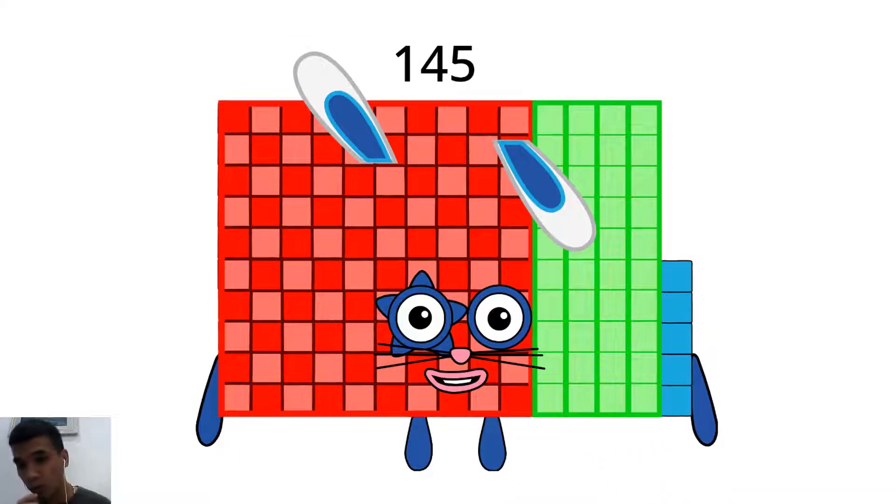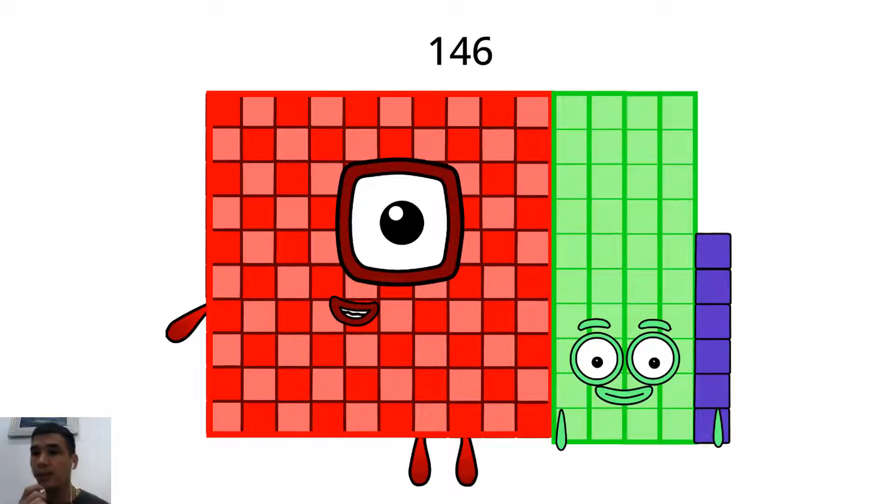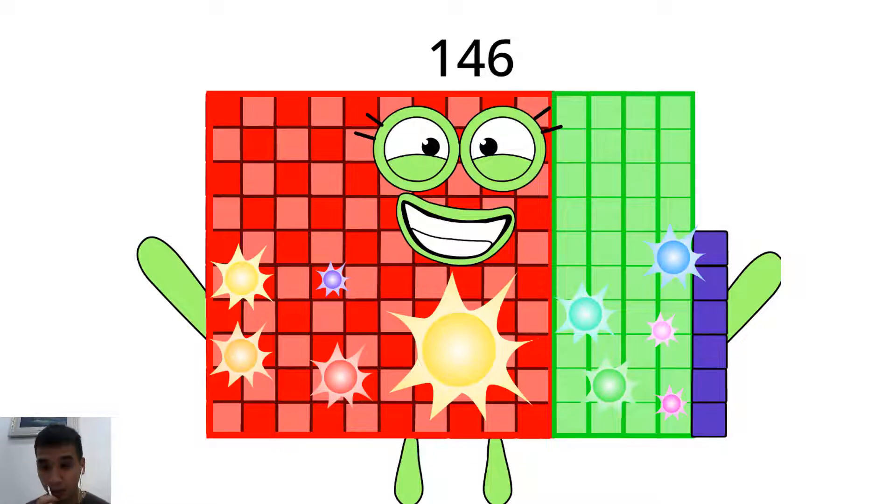Hello, 144. I'm a super square, 12 times 12. I am 145. I'm a fluffy bunny, 5 times 29. Hello, 146. I'm a little miss happy, double 73.